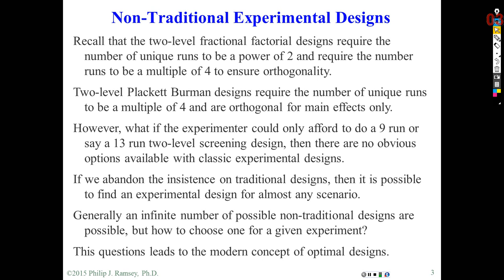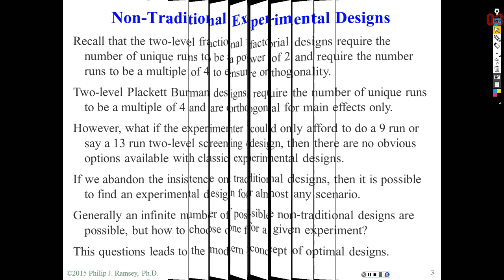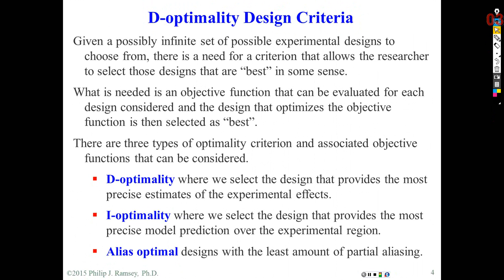Underneath the hood, this is what's going on in the custom design platform in JMP. It is actually quite unique among statistical software packages in what it's able to do in terms of generating designs. When I talk about optimal, there are three types of optimality we consider in creating a design. One is called D-Optimal, which gives you the most precise estimates of the experimental effects. Second is I-Optimal, which gives you the most model precision. And finally, alias-optimal — very unique to JMP — in which the goal is to come up with a design that gives you the least amount of partial aliasing.